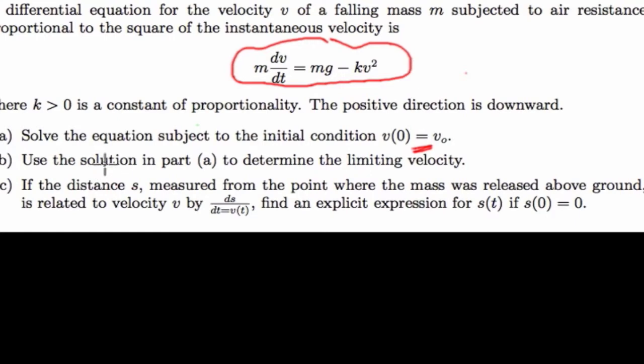The next thing is, we use our solution that we obtain in part A to determine the limiting velocity. So limiting velocity here, you are told to find the limit as t tends to infinity of whatever velocity we get.